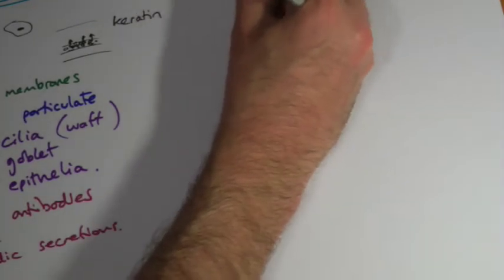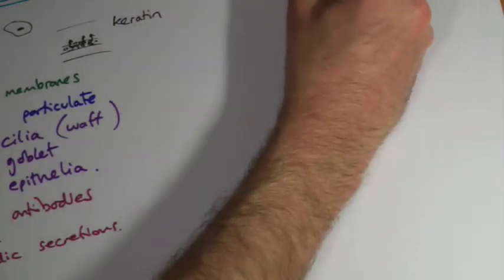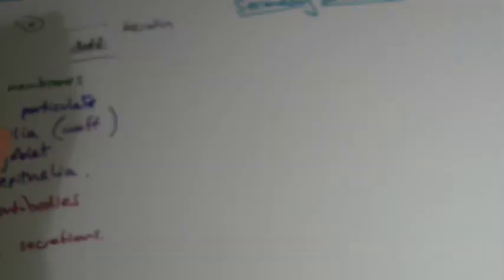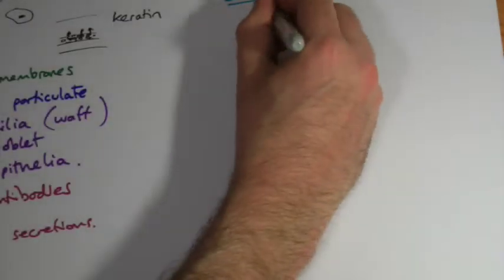So all of these are non-specific because anything that it comes into contact with, hopefully it will destroy. However, you also get to a secondary defense. So all these can sometimes be referred to as your primary defenses. The secondary defense involves cells, however they're still not specific.